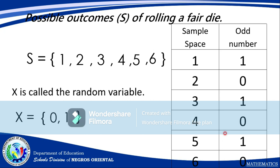If you think about the probability distribution table: for X = 0, there are 3 even numbers out of 6, giving P(0) = 3/6 = 1/2. For X = 1, there are also 3 odd numbers (1, 3, 5), giving P(1) = 3/6 = 1/2.